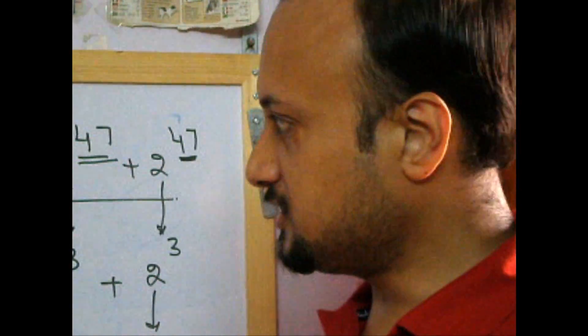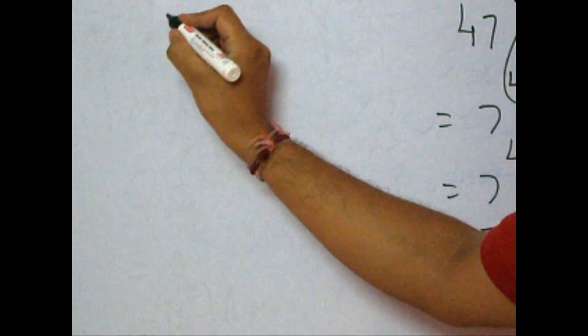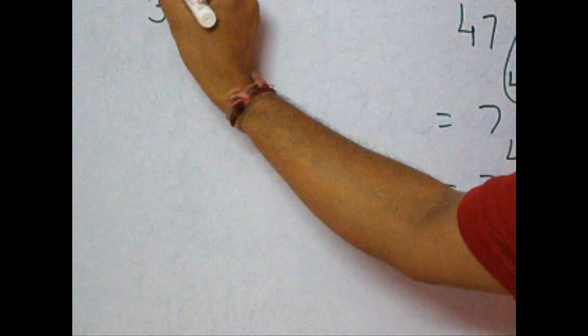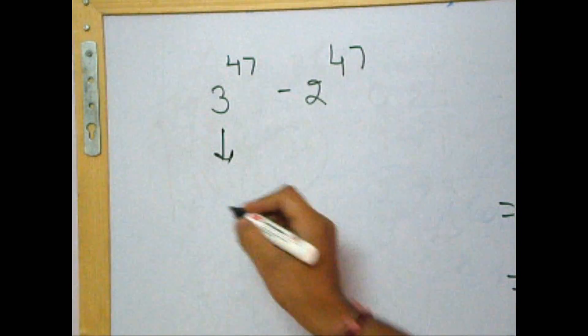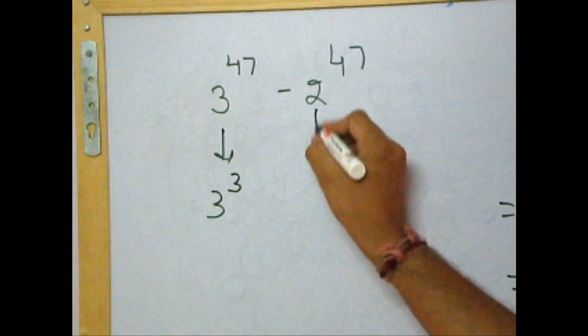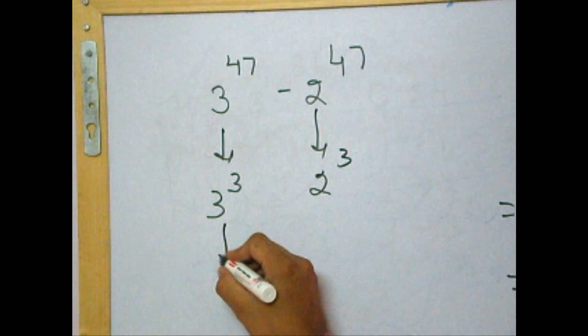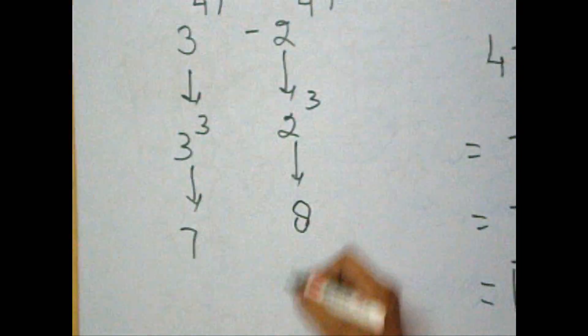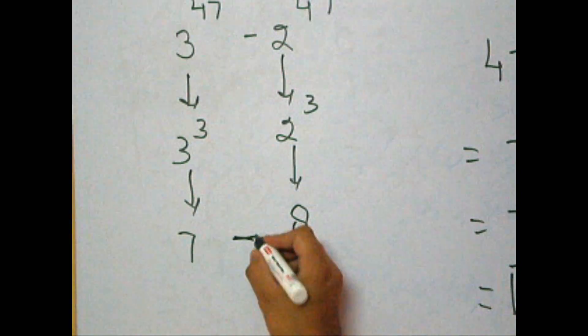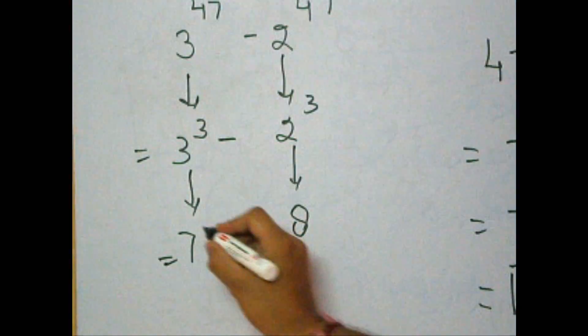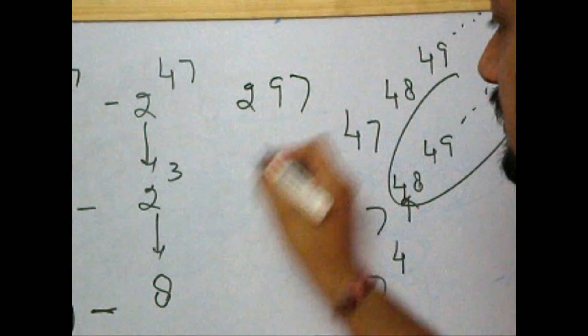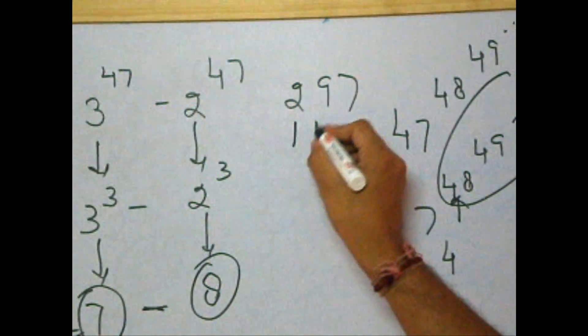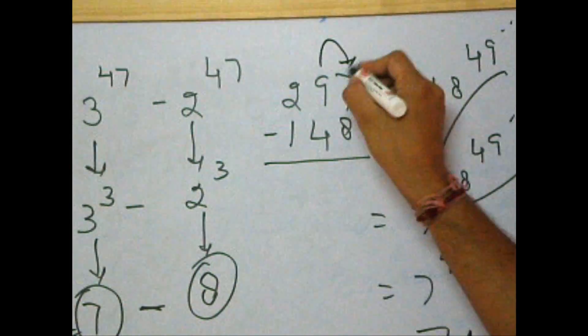Let's move on to more trickier questions. Say for example, 3 to the power 47 minus 2 to the power 47. Now, 3 to the power 47, from the previous question, is 3 to the power 3. And 2 to the power 47 is 2 to the power 3. This ends with unit digit 7, while this ends with unit digit 8. So, what will be the unit digit of the difference? This is a number which ends with 7, for example 297. This is a number which ends with 8, for example 148. When we subtract, how do we go about subtraction?